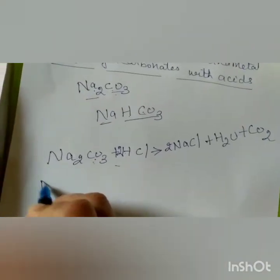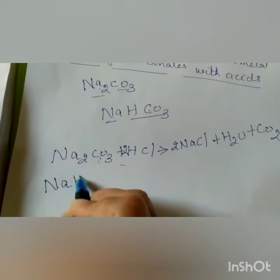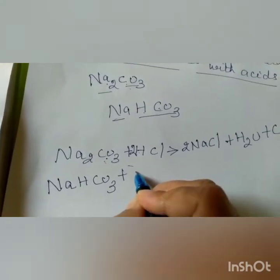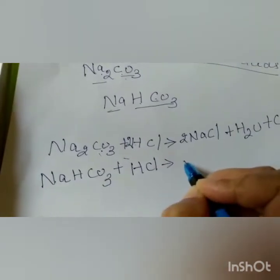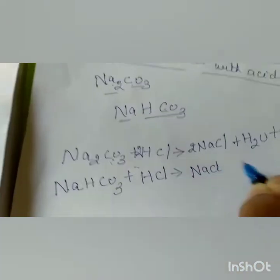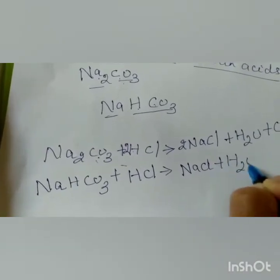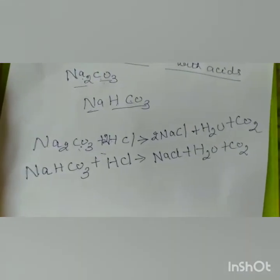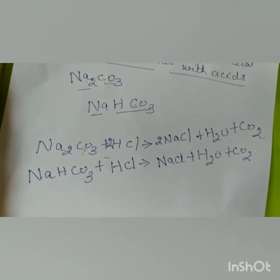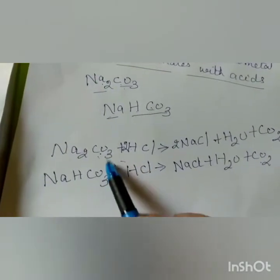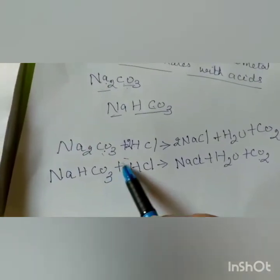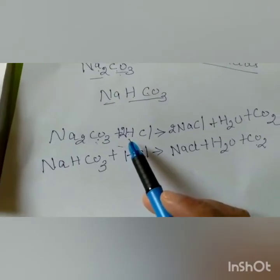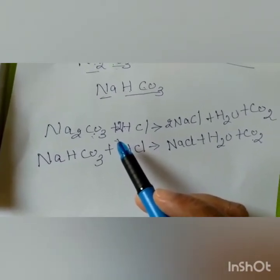Now let us take the case of metal hydrogen carbonate — NaHCO₃. Here if we add HCl, you will get NaCl plus water plus carbon dioxide. In test tube B also you will see gas evolved, and that gas turns lime water milky — that is carbon dioxide. Because in both cases carbonate is present, acids liberate carbon dioxide gas, and water and salt are formed when acids and metal carbonates react with each other.